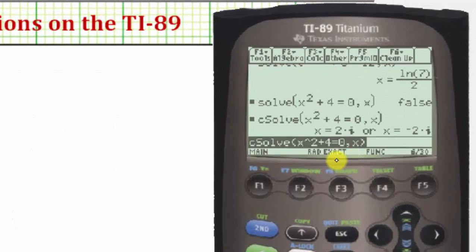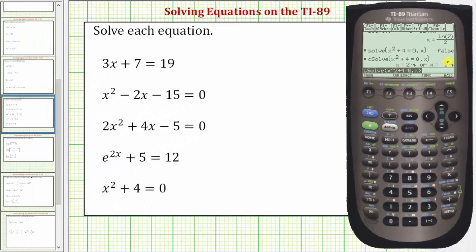Notice how we have two complex or imaginary solutions: x equals 2i or x equals negative 2i. I hope you found this helpful.